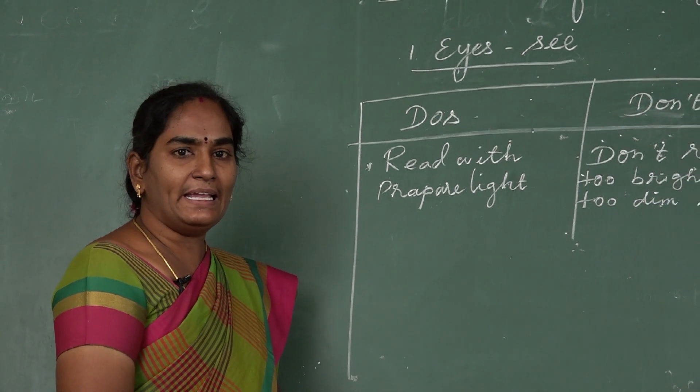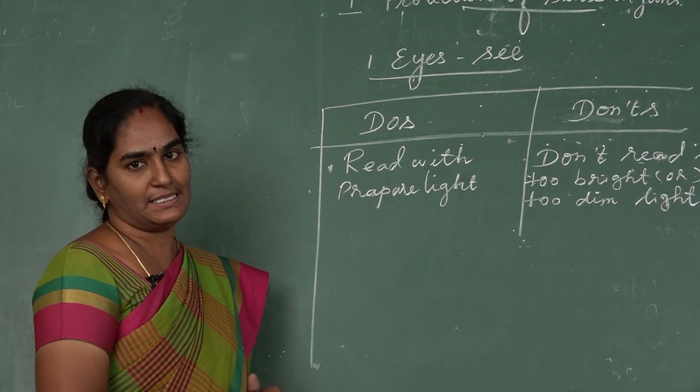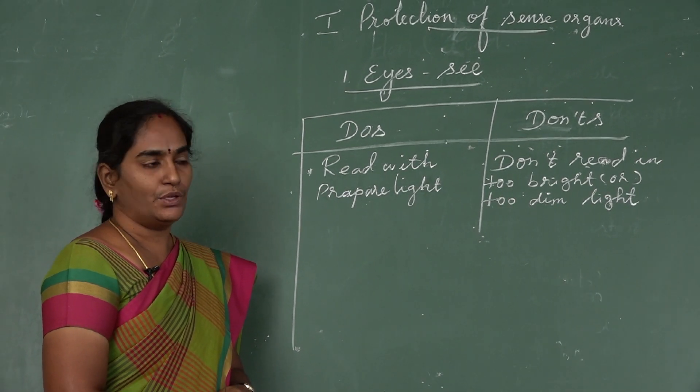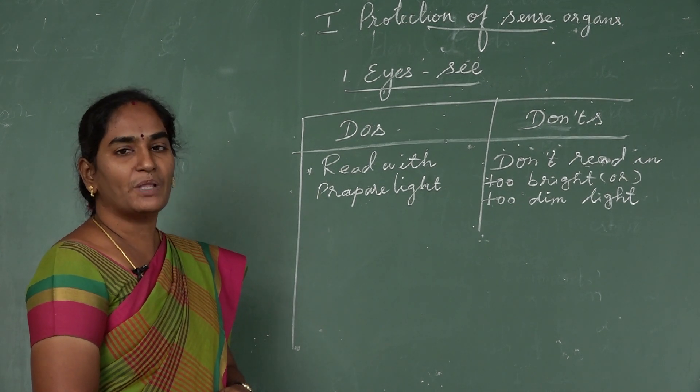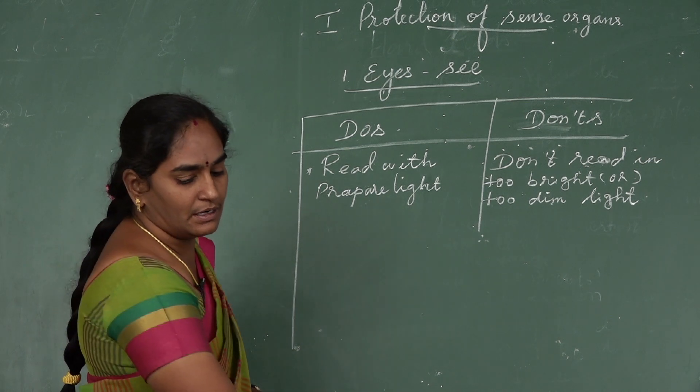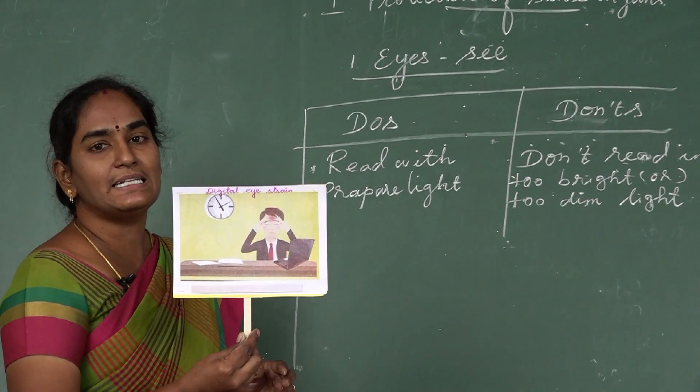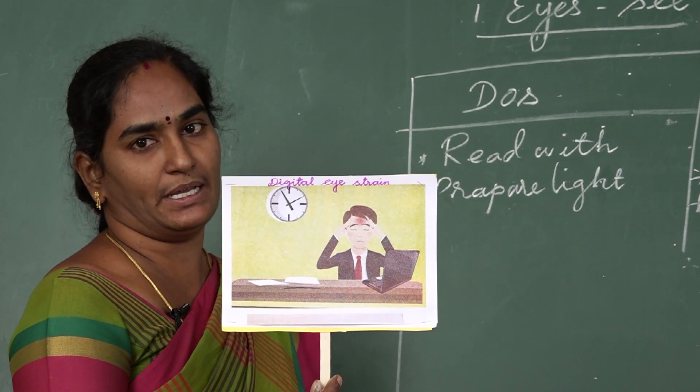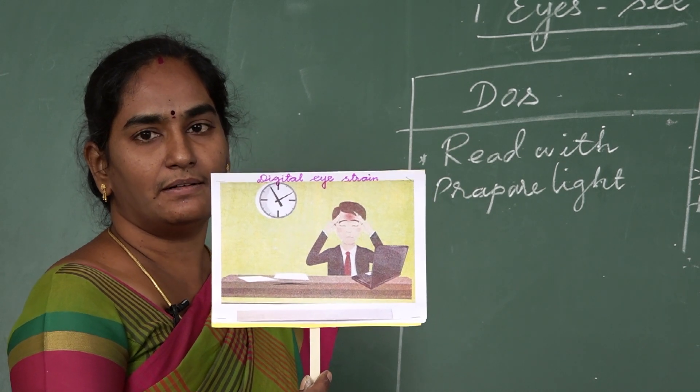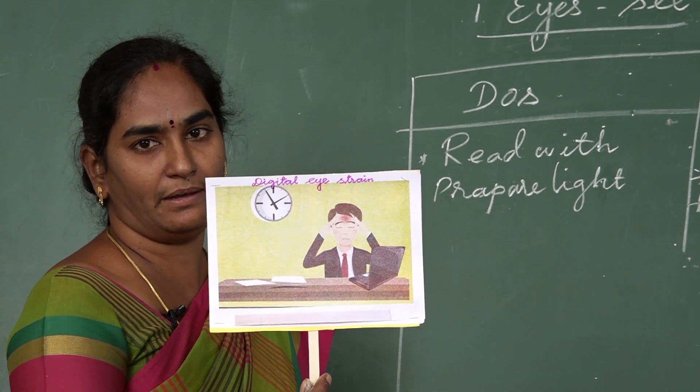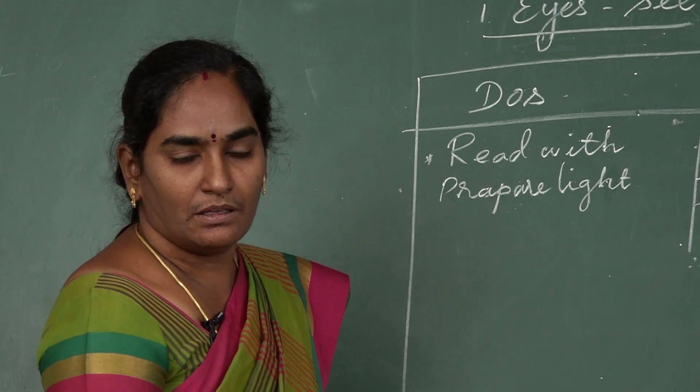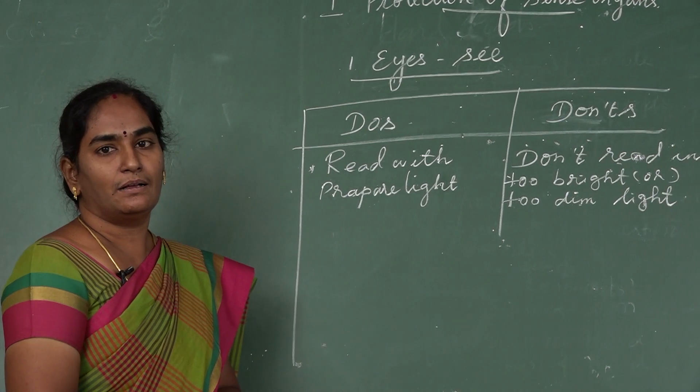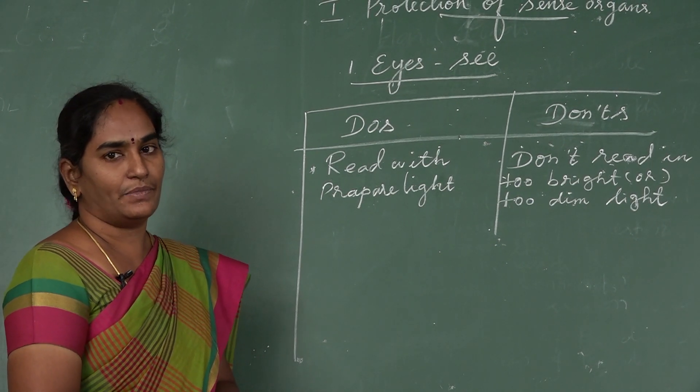If you find any difficulty to read the classroom board from your place, tell your teacher or parents to consult a doctor. You want to get suggestions from the ophthalmologist. Nowadays most of the people have digital eye strain because most of the people are working at computer. This condition leads to dry eyes, eye strain, blurred vision and headache.